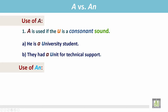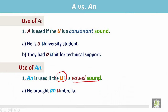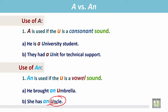Use of AN. AN is used if the U is a vowel sound — the word begins with U and it has a vowel sound. He brought an umbrella. The word umbrella begins with the vowel U and it has a vowel sound, so we write AN before the word umbrella. She has an uncle. The word uncle begins with the vowel U and it has a vowel sound, so we write AN before the word uncle.